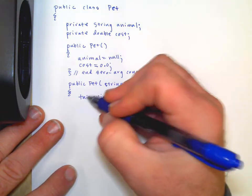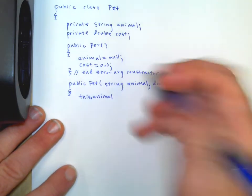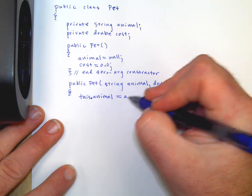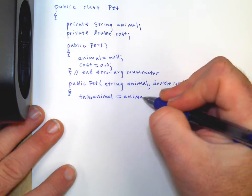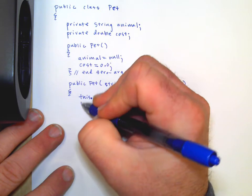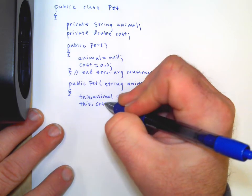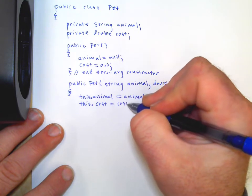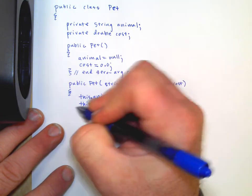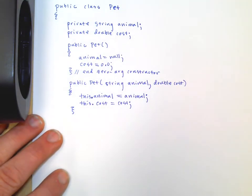But what you should do if you do this is say this dot animal, because if you just say animal, is it this animal or is it this one right here? Is it the animal private instance variable, or is it the animal temporary variable from the argument? This dot says, oh, this is for this object. So if you say this dot animal equals animal, it makes it more clear. And so this dot cost equals cost. So this is just to clarify which is which.